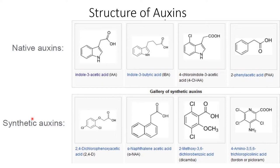In case of synthetic auxin, examples include 2,4-D, full form is 2,4-dichlorophenoxyacetic acid; alpha-naphthalene-acetic acid; 2-methoxy-3,6-dichlorobenzoic acid; and 4-amino-3,5,6-trichloropicolinic acid. So these are some of the examples and structures of auxin.